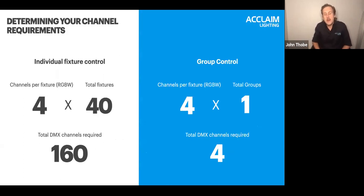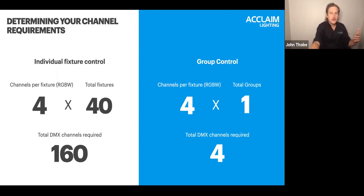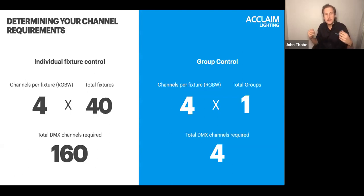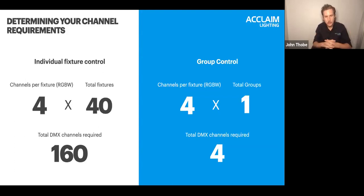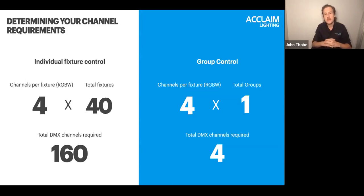Determining total channel count comes back to group or individual mode. With individual control, you must account for all DMX channels for every individual fixture, and that can add up very fast — especially with pixel-mapped products with a large number of sections. With group control, it simplifies things, bringing everything back into a single group for easier operation.